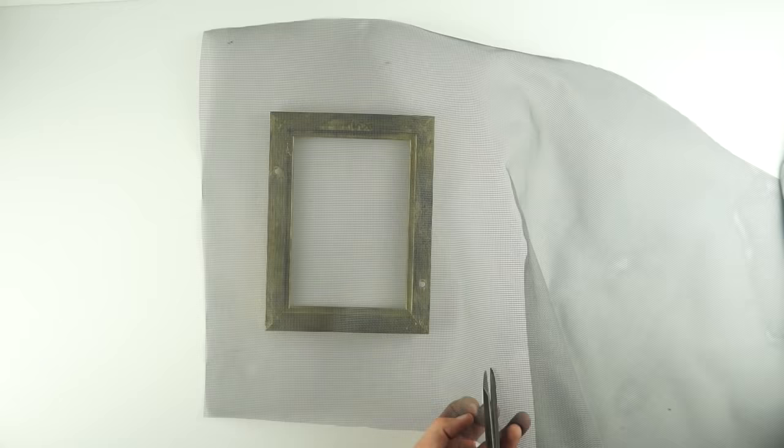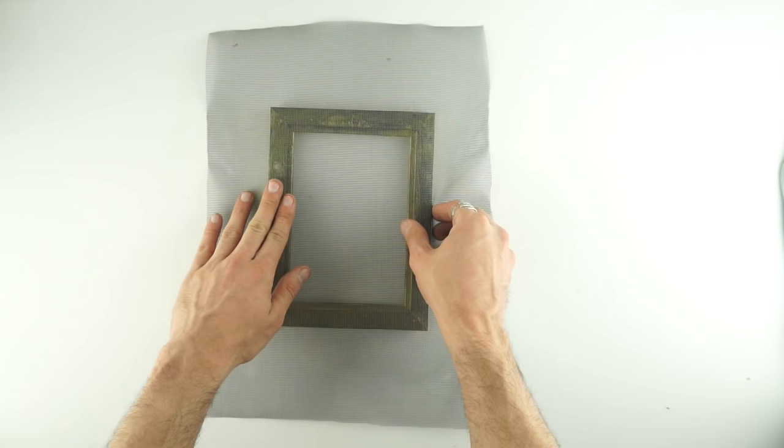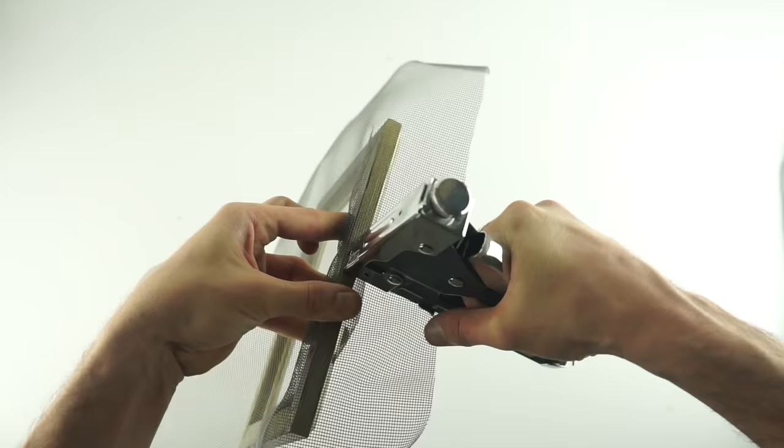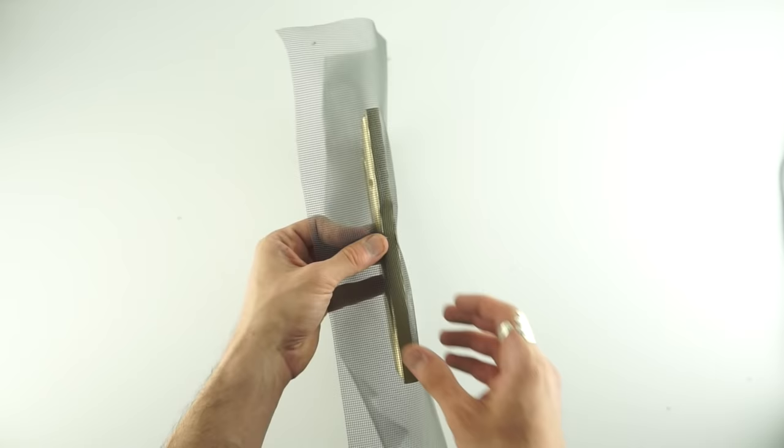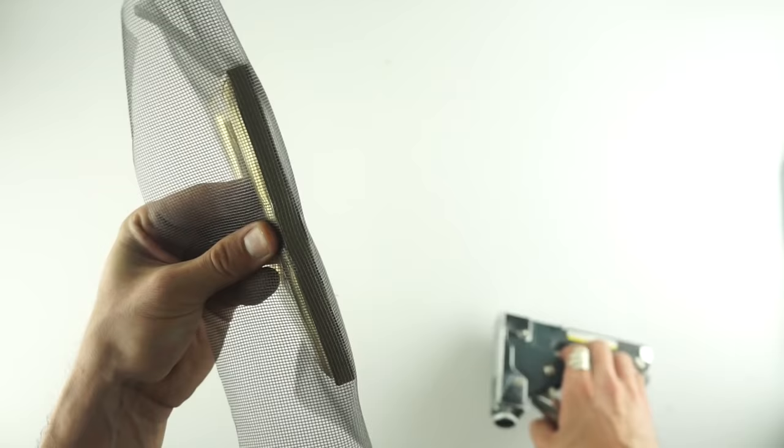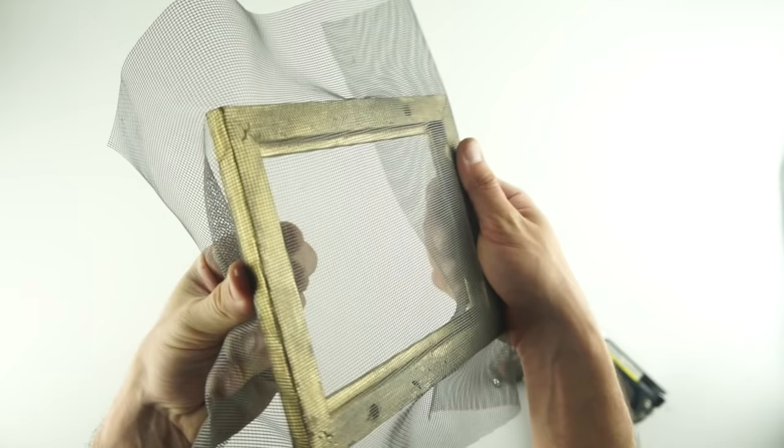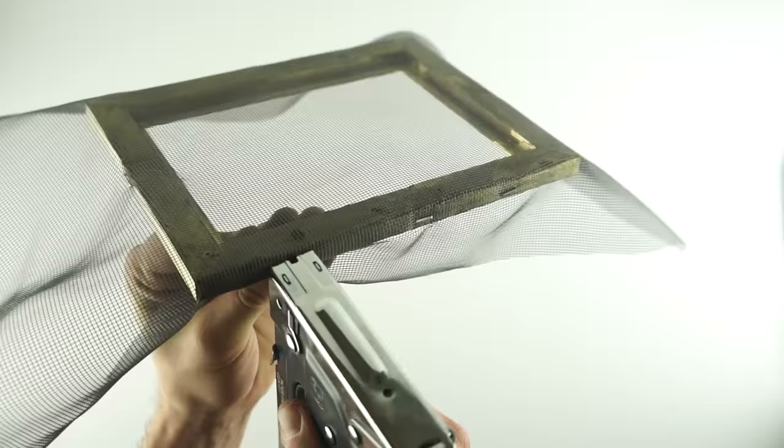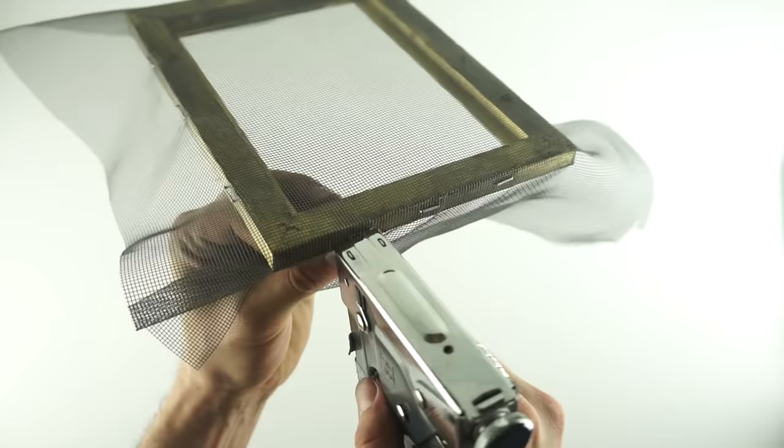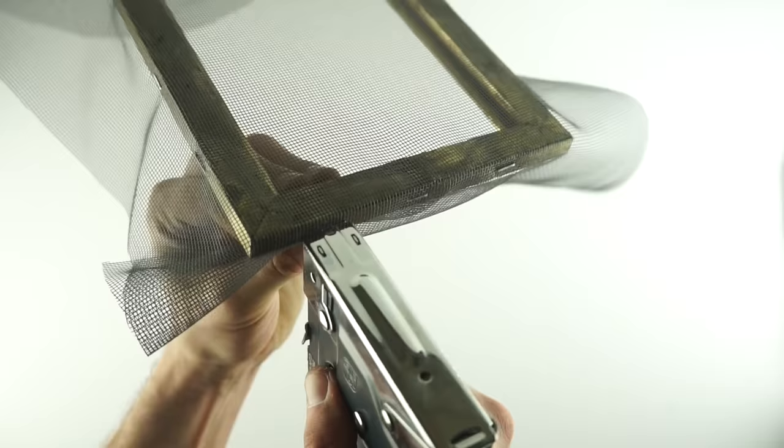Next, what you're going to do is cut out that screen to fit, and you're just going to staple on each side, making sure that the screen is fairly tight. Put a staple here, and here, and here, here, here, or here, here, maybe here, yeah, oh here, oh, okay, yeah.